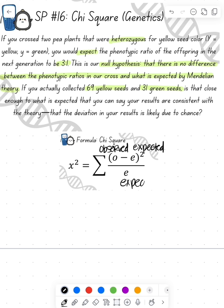Our equation is going to be observed minus expected, squared, over expected, and we're going to do the summation. That just means we're going to add all these numbers together.